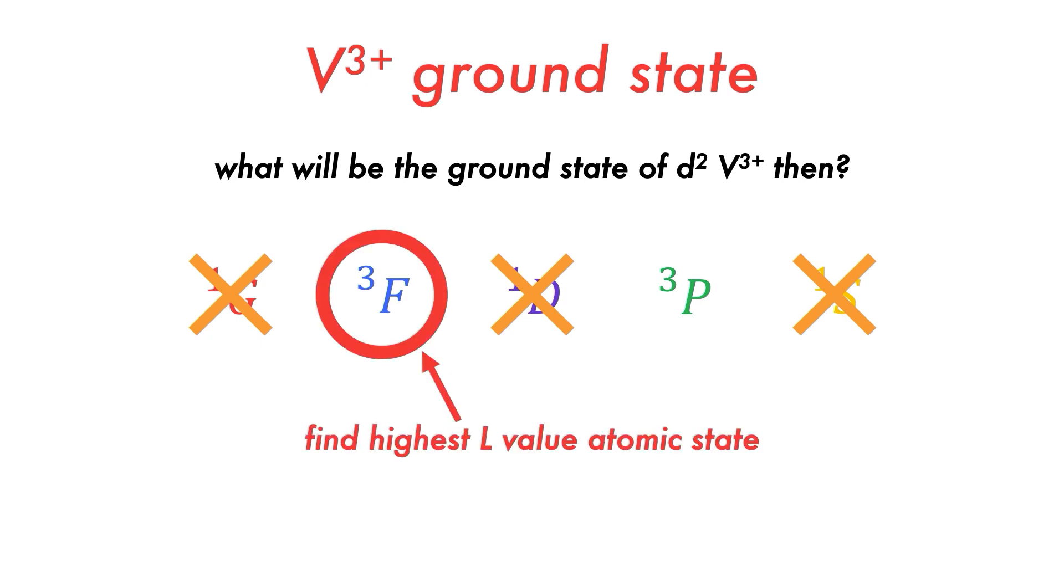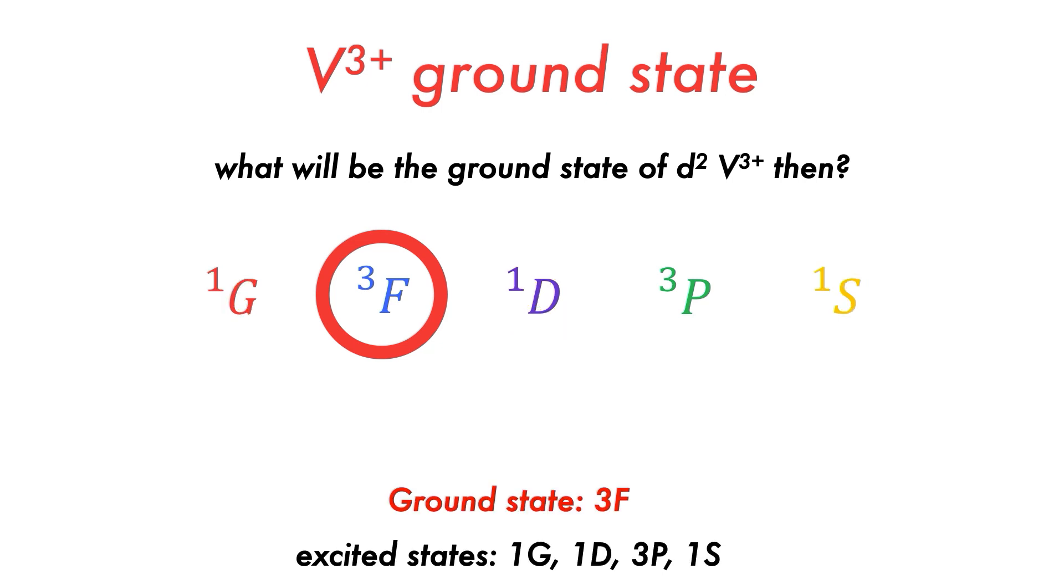Then, we determine which atomic state has the higher L value. Since F has an L value of 3 and P has an L value of 1, F will be our ground state. The others will be the vanadium 3+ free ion excited states.